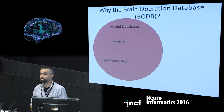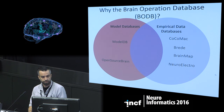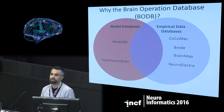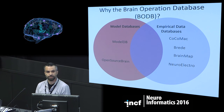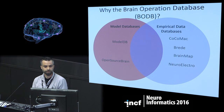There are a few databases currently dedicated to storing details about computational models of the brain, such as ModelDB and Open Source Brain. These are focused more on storing the code of the model and details about the model. On the other side, there are a lot of empirical data databases specialized for different types of experimental data, like connectivity data in the monkey, human imaging data, and neurophysiology data.